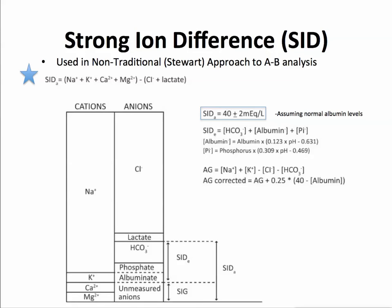We subtract from the cations the major anions that we can measure — chloride, and sometimes lactate. But there are also unmeasured anions at the bottom of the anion category. We call this difference SID, or strong ion difference. When we subtract sodium plus potassium plus calcium plus magnesium minus chloride plus lactate, it's normally about 40 — assuming normal albumin levels. So the strong ion difference is normally about 40. We can also calculate an anion gap by going sodium plus potassium minus chloride and bicarbonate.